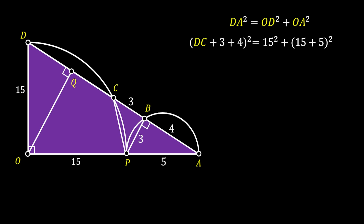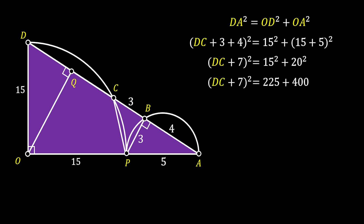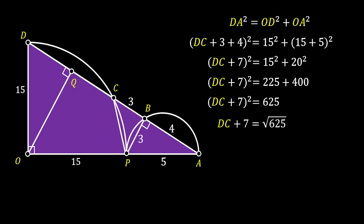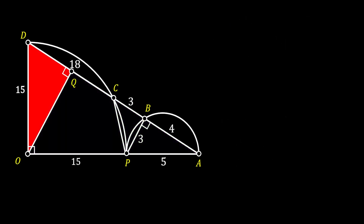Simplifying and squaring the values on the right, we get that (DC + 7)² equals 625. After simplifying, DC equals 25 minus 7, which means segment DC is equal to 18.